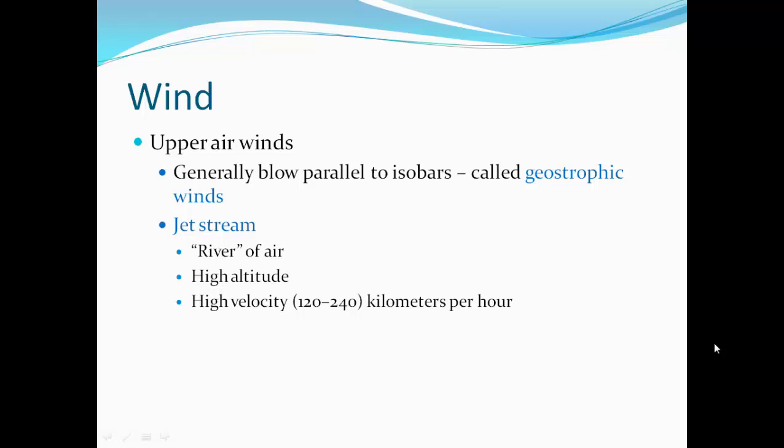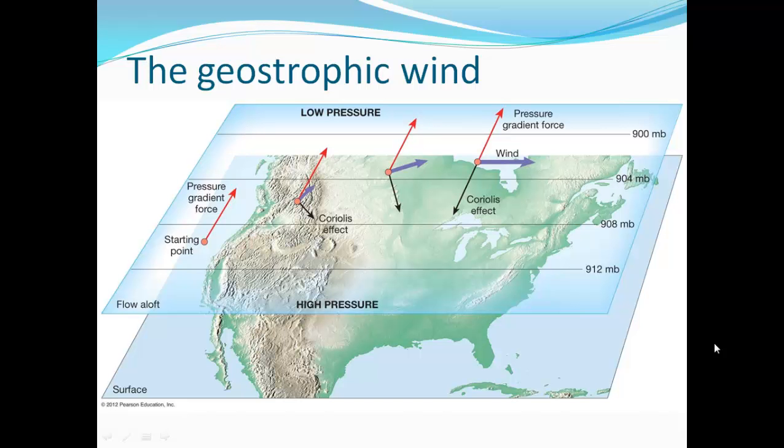Upper air winds generally blow parallel to the isobars — these are called geostrophic winds. A common one you may hear about in the news, especially in winter, is the jet stream. It's a river of air at very high altitude that moves very fast — 120 to 240 kilometers per hour.